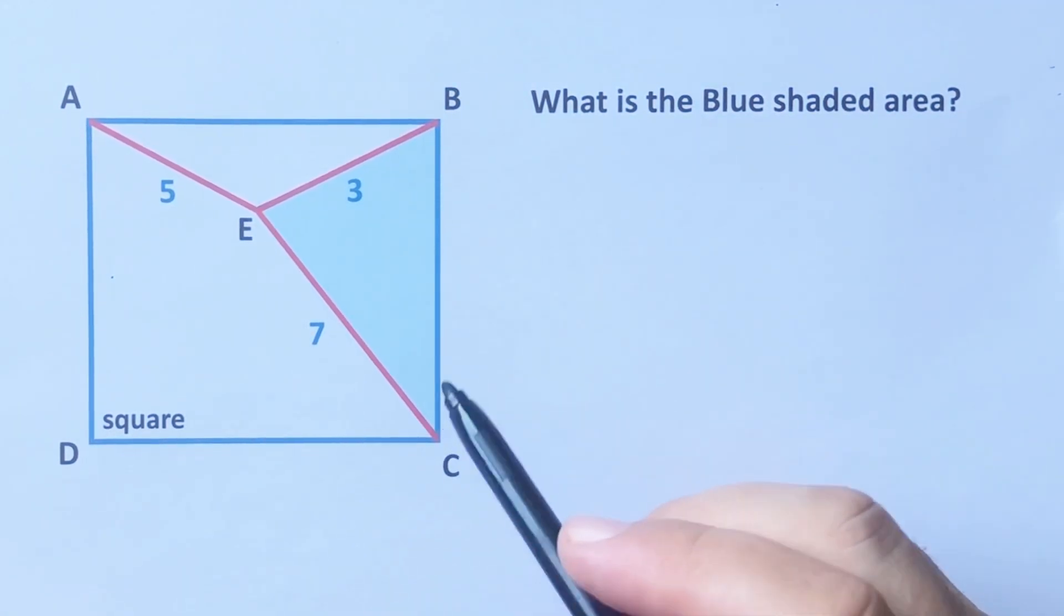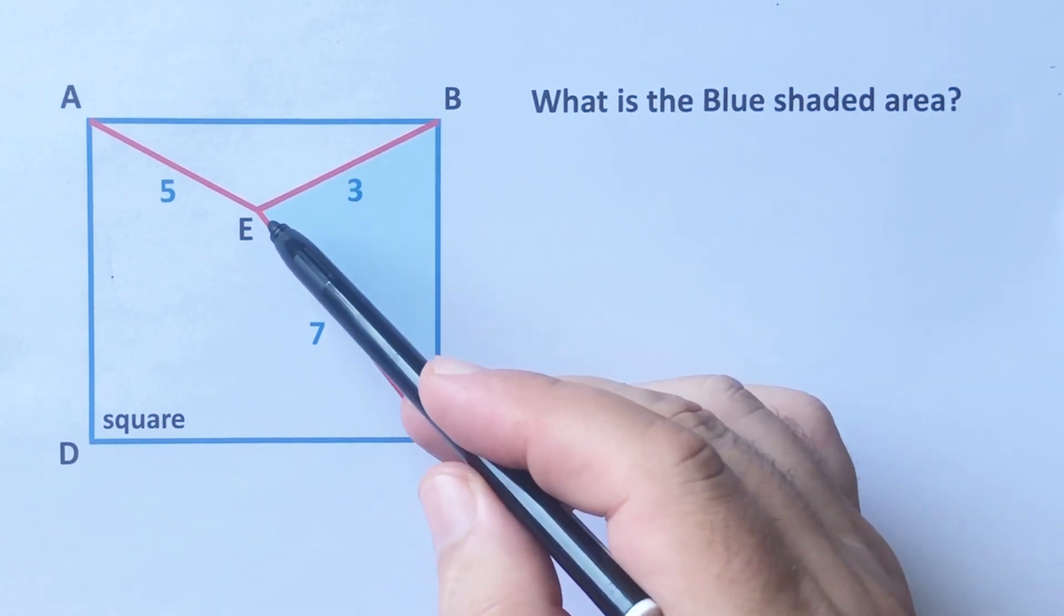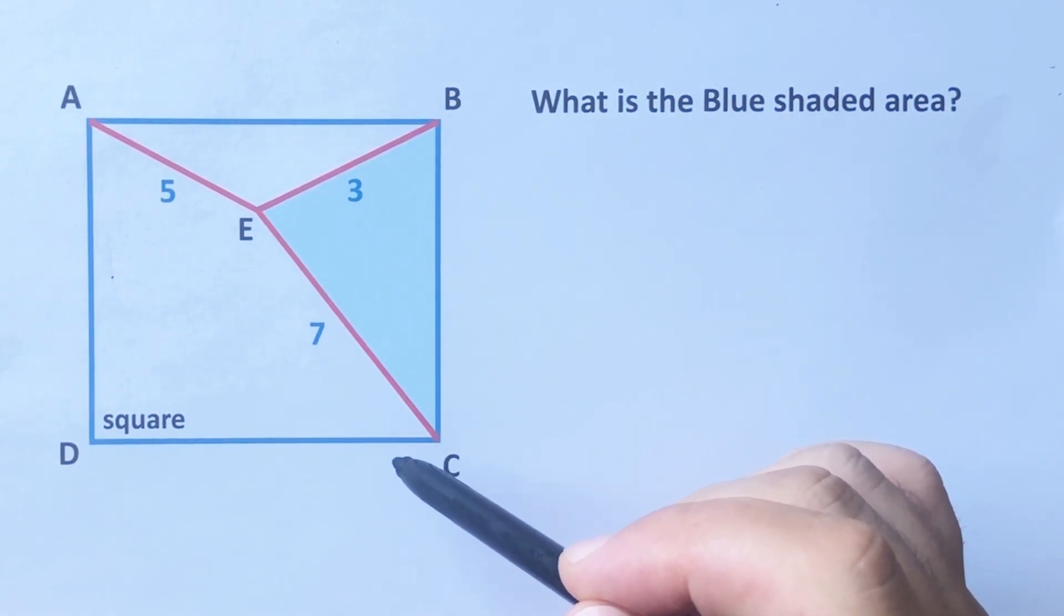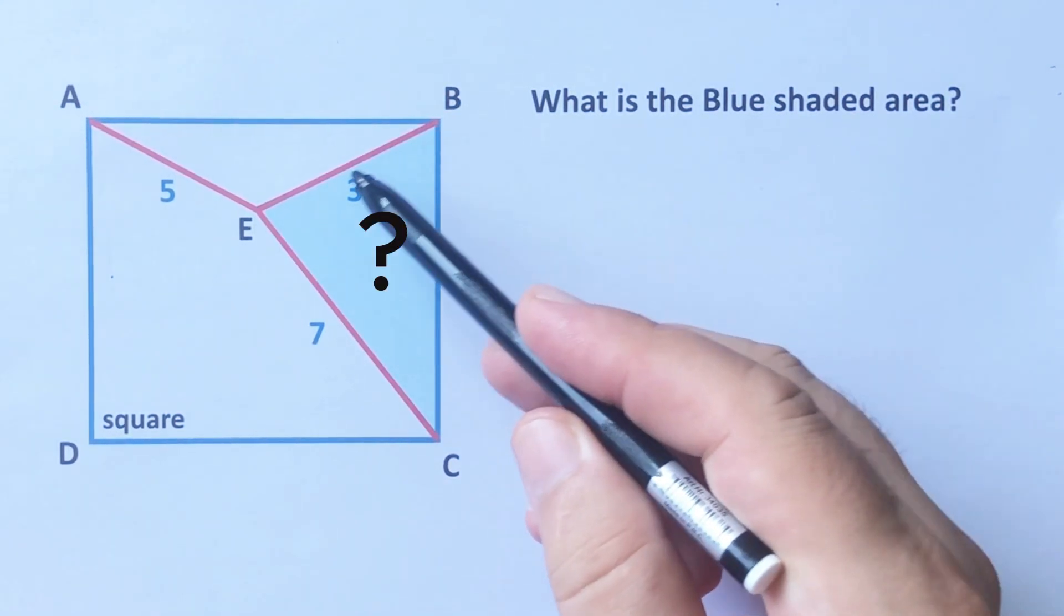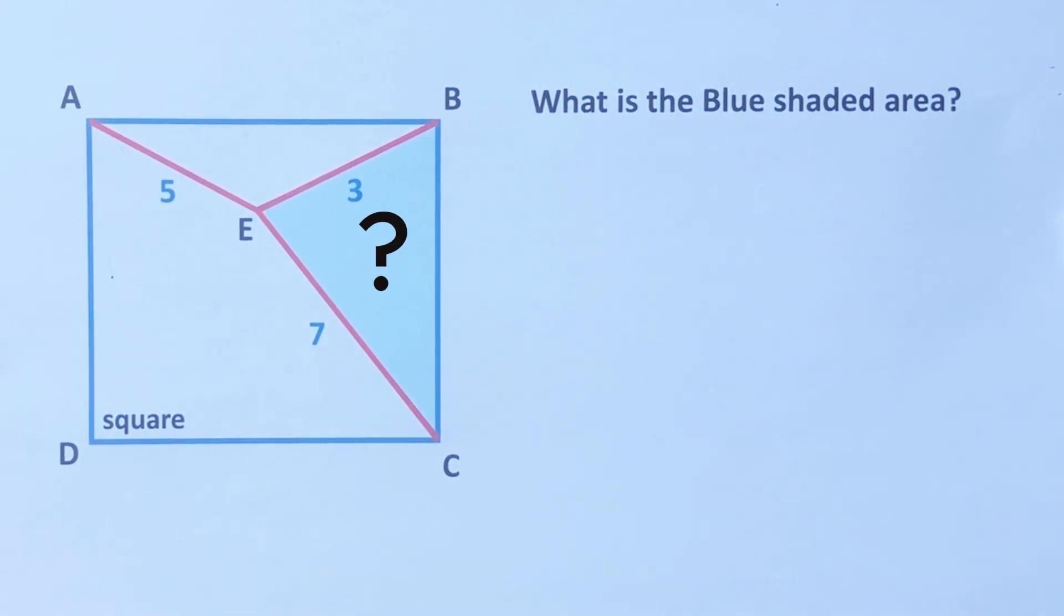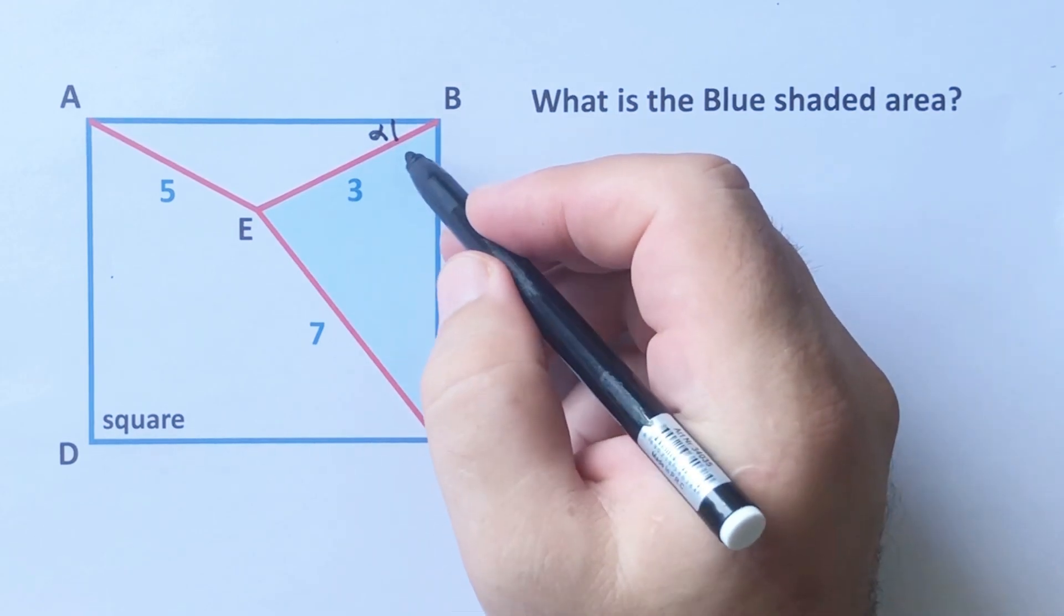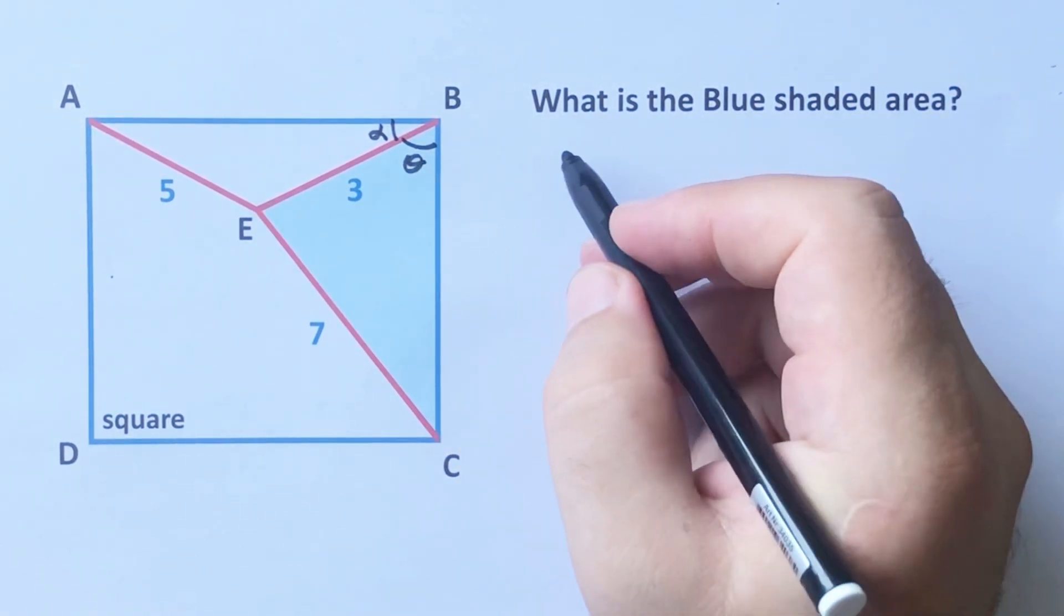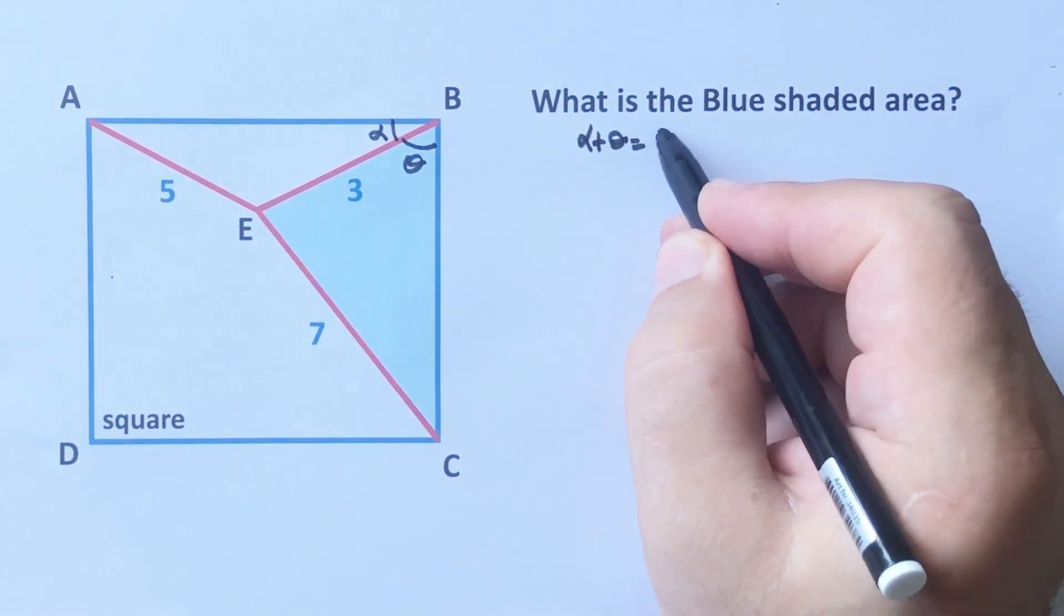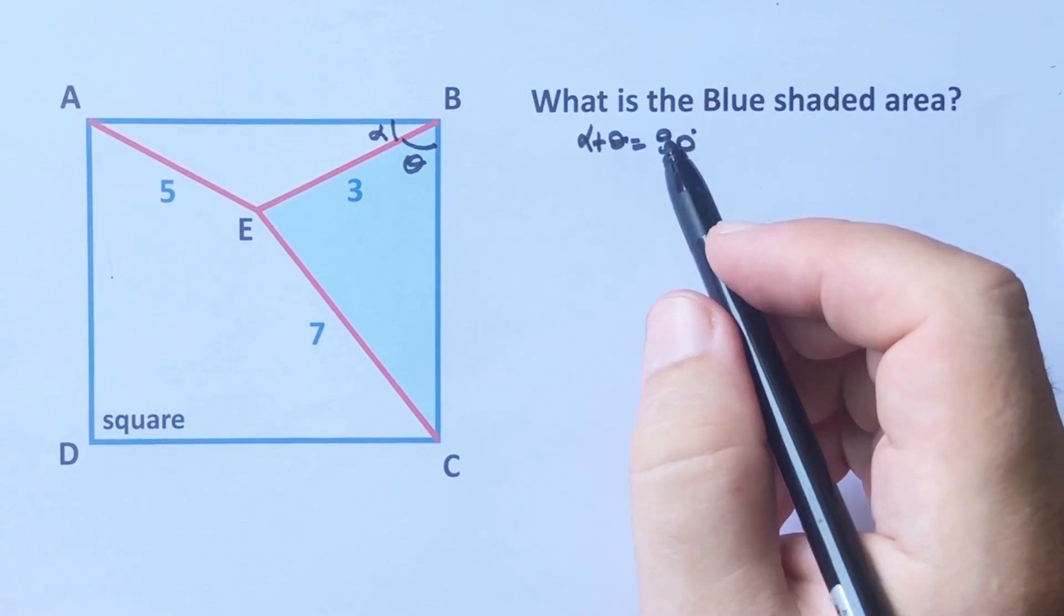Hello everyone, in this video we have one square. Here is 5, here is 3, this length is 7, and the blue shaded area is asked. First step, let's call here alpha and here theta. We know that alpha plus theta equals 90 degrees, right, because of the square.